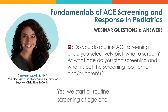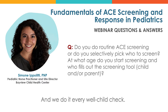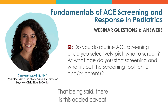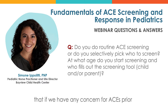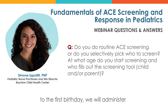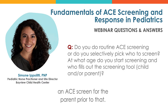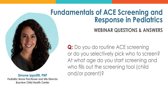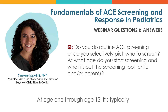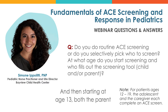We start all routine screening at age one and do it at every well child check. That being said, if we have any concern for ACEs prior to the first birthday, we will administer an ACE screen for the parent prior to that. At age one through age 12, it's typically the parent who fills the ACE screen out. And then starting at age 13, both the parent and the teen would fill out their own ACE screen.